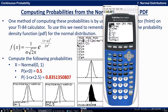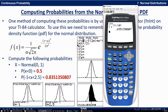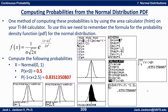From the home screen, we can integrate Y1 with respect to X from negative 1 to 2.5 using math 9, which brings up an integral sign. We put our lower limit of negative 1 and upper limit of 2.5. For the normal with mean 3 and standard deviation 2, we change the formula accordingly — putting the standard deviation of 2 and mean of 3 into the formula — and then integrate from 2 to 5 to get that probability.